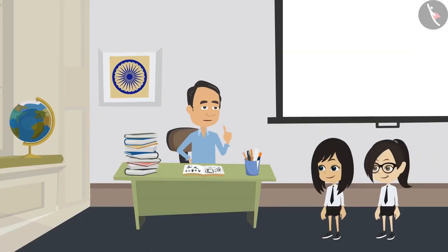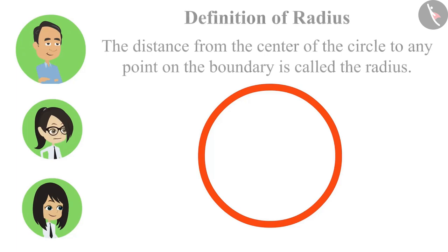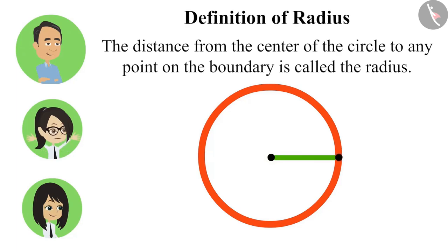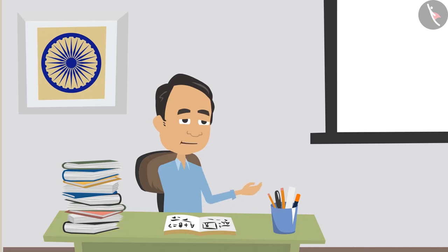A circle can have only one radius. No, you got it wrong. Tell me, what is the radius? Sir, radius is the distance from the center to any point on the boundary of the circle.